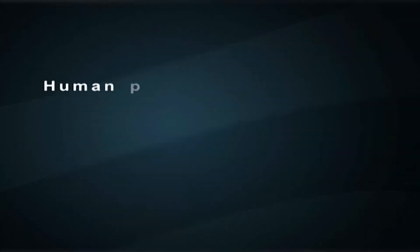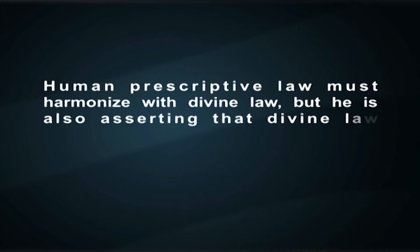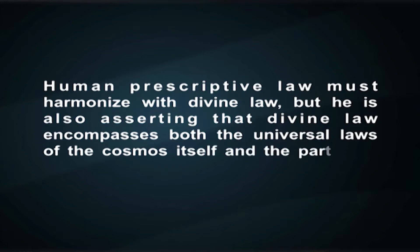This is an optimistic conclusion suggesting that human thought can mimic divine understanding at least to some degree. Xenophanes stresses the difficulty of coming to certainty, particularly about things beyond our direct experience. Heraclitus claims that human perspective law must harmonize with divine law, but he is also asserting that divine law encompasses both the universal laws of the cosmos itself and the particular laws of men. The cosmos itself is an intelligent, eternal system.